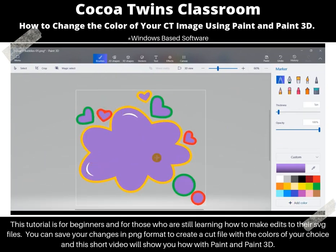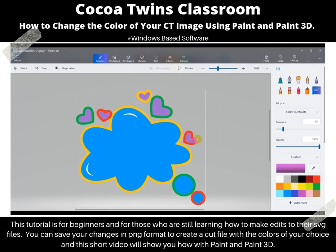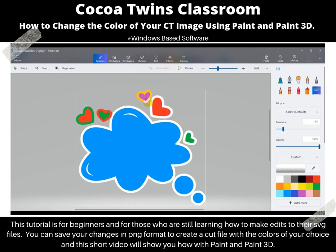So now I want to go ahead and change the cloud to maybe blue. I got to select blue, the paint bucket, and then select the item. And I'm going to go ahead and do the hearts — just change them to different colors. I'll change this one to maybe red, change this one to maybe red, and change this one to maybe green. Or even go back and make them all white. I actually like the all white.